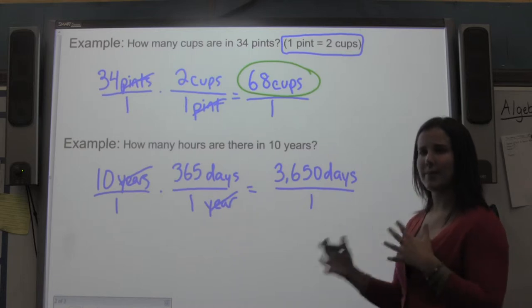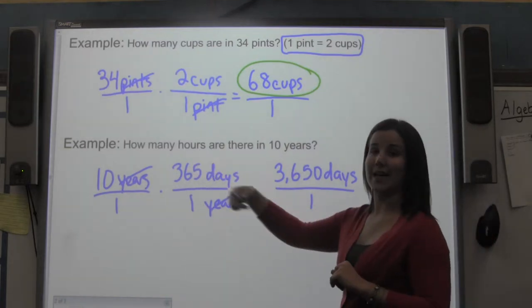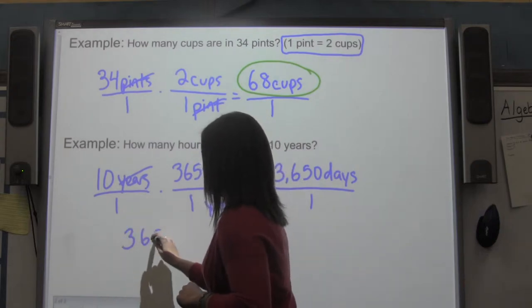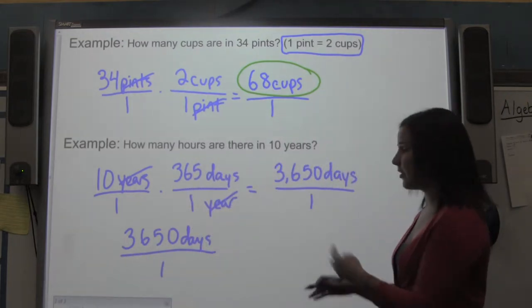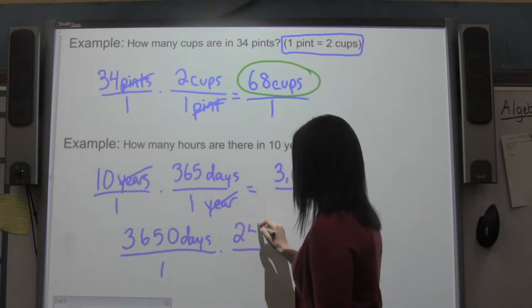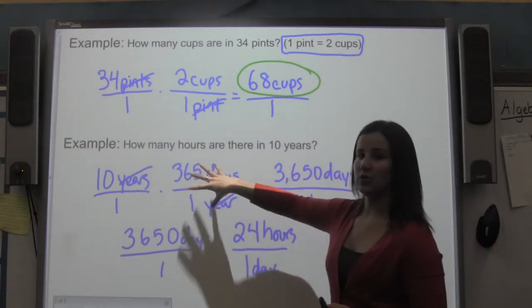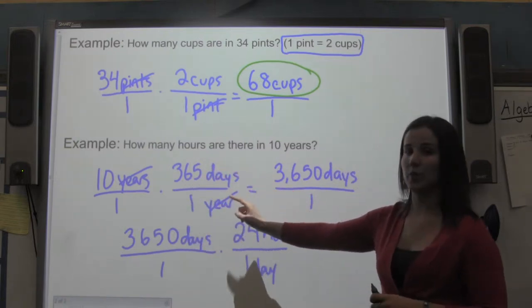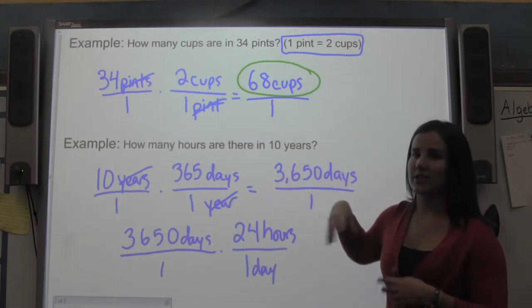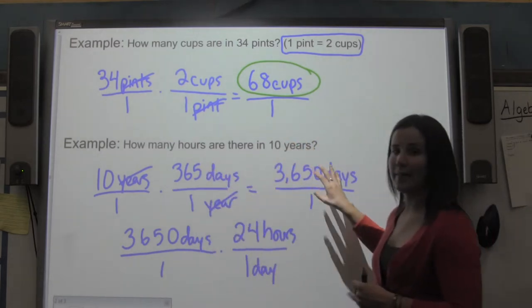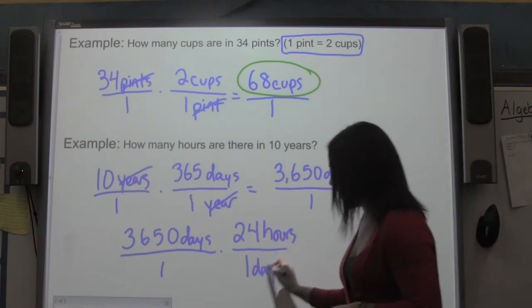Now I have 3,650 days and need to convert that into hours. I'll rewrite this and put days in the denominator so they cancel, then multiply by 24 hours in one day. I can multiply by these conversion factors because each one equals one whole — 365 days over one year represents the same value written differently.